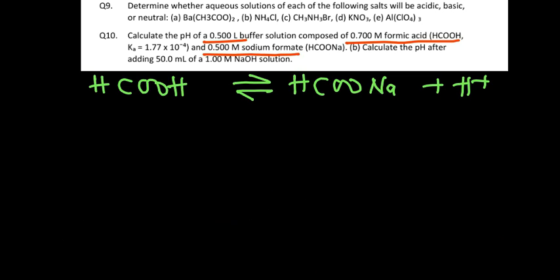The first answer we found is 3.6. Now the second part of the question says we have to calculate the pH after adding 50 milliliters of NaOH.